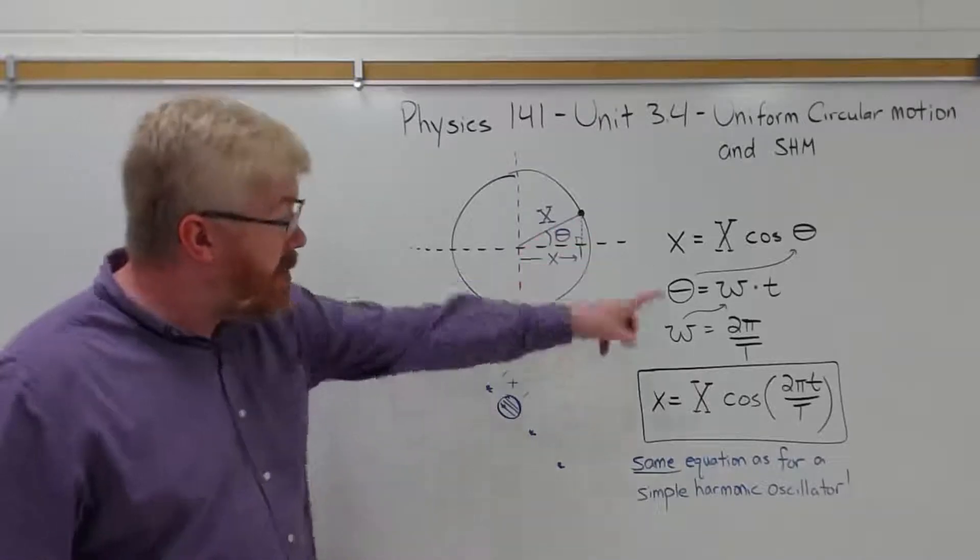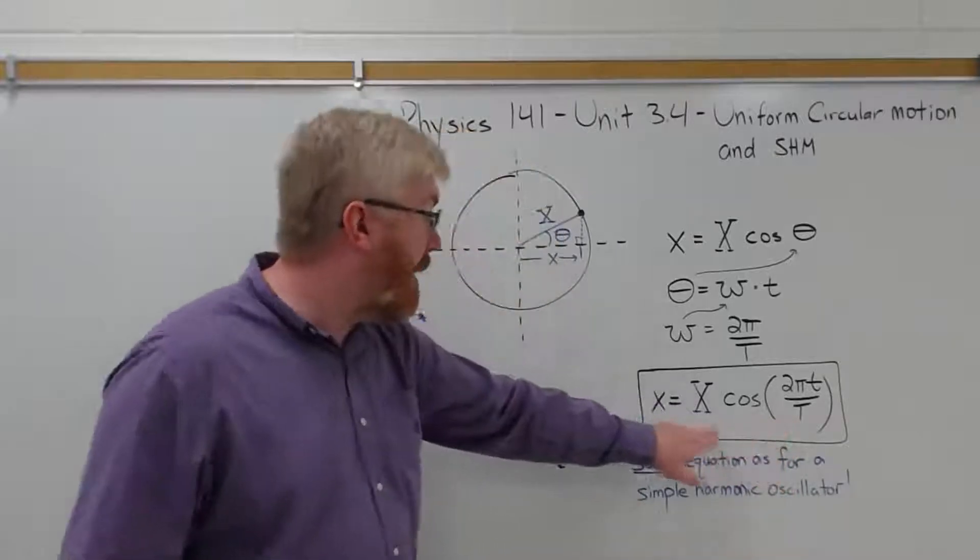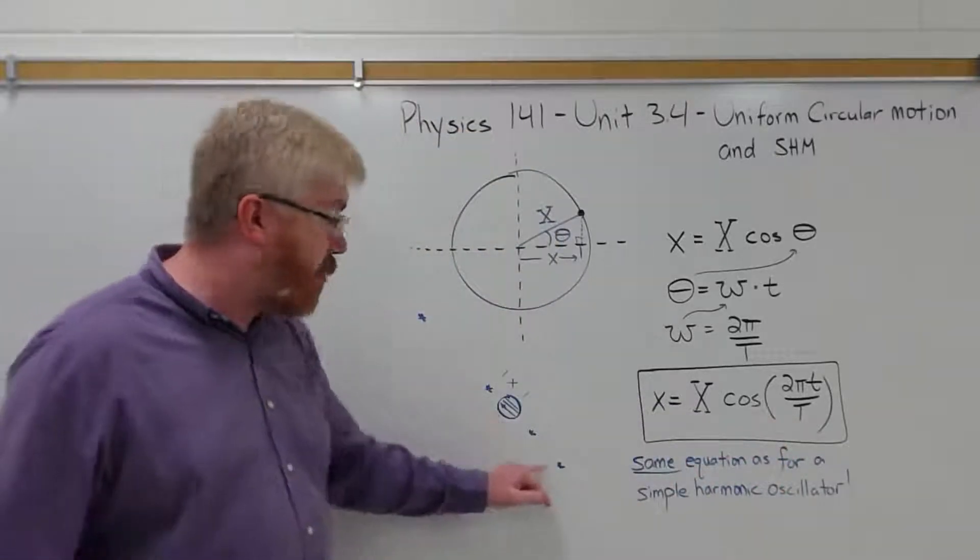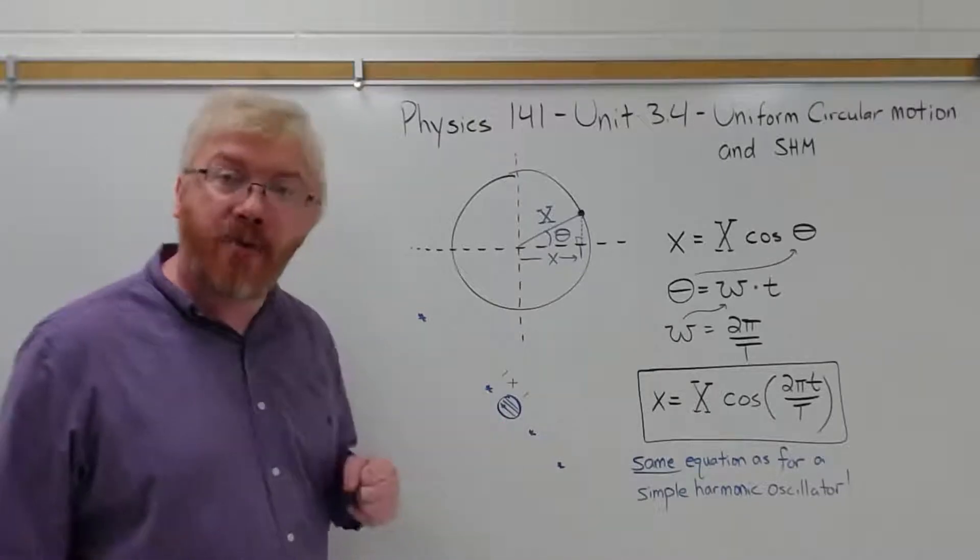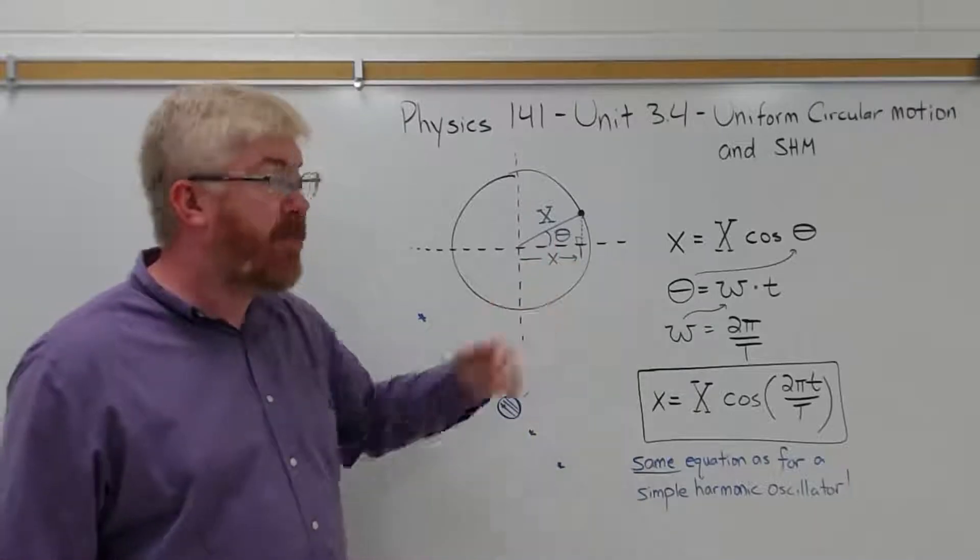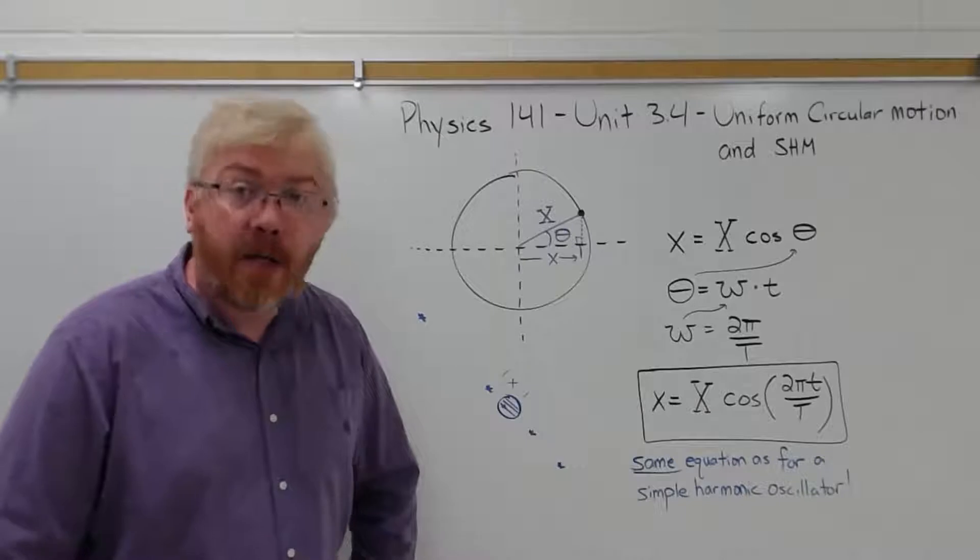He was able to use this to calculate what the period and amplitude or radius of the orbits were, at least relative to the size of Jupiter. And was able to actually calculate the periods of these moons using simple harmonic motion and uniform circular motion equations. That's huge.